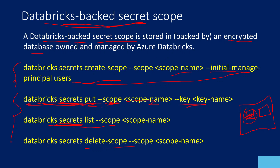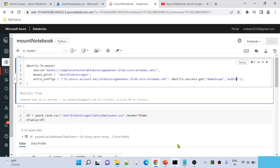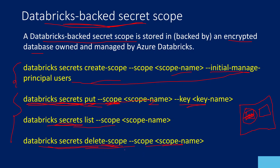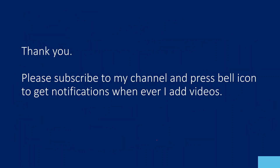If you want to delete a secret scope you created, use this command: databricks secrets delete-scope --scope demo-scope. You can try that as homework to see how to delete a secret scope. I hope you got an idea about Databricks-backed secret scopes — how to create a secret scope, how to create a secret, and how to store a value inside the secret. Thank you for watching this video. Please subscribe to my channel and press the bell icon to get notifications whenever I add new videos. Thank you so much.